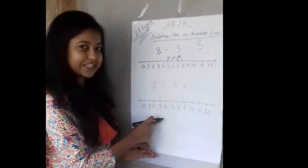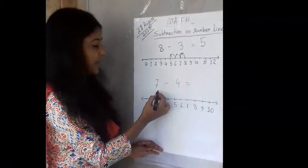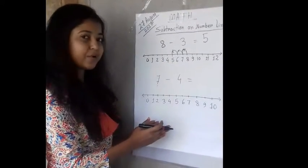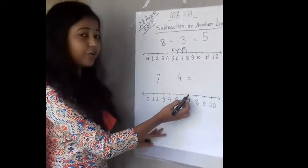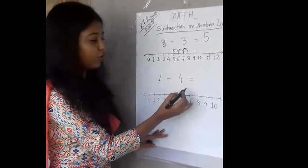Let's do the next number. Here is 7 minus 4. That means we have to subtract 4 from 7. And we will do the same process here also. So we will count from 7 backward. How much? We have to count 4.